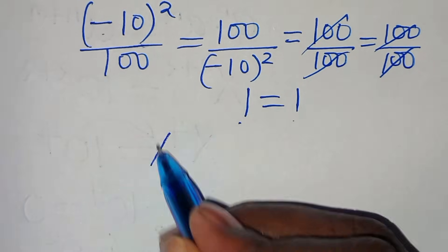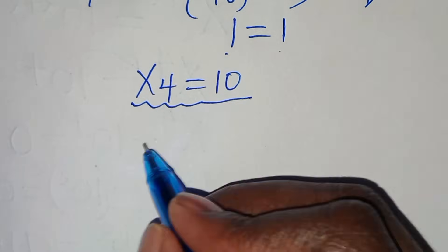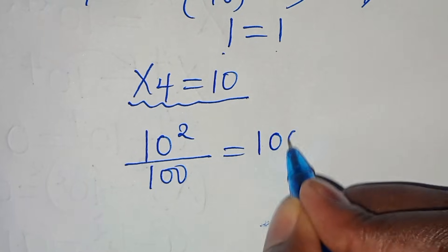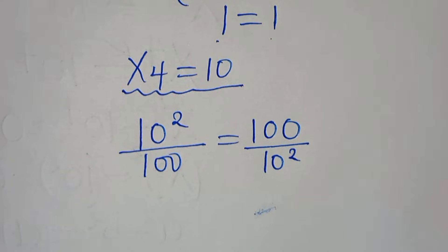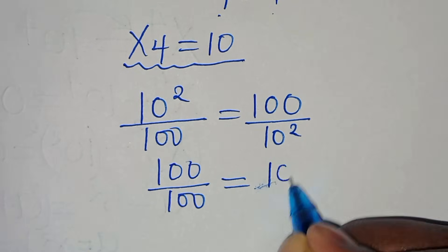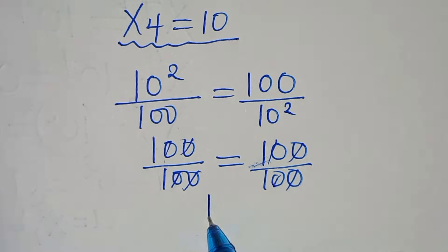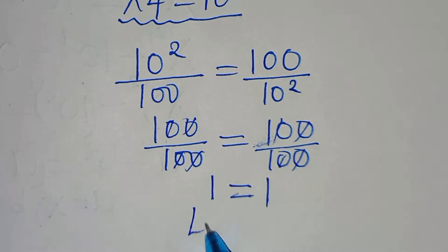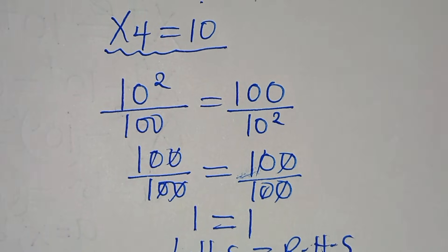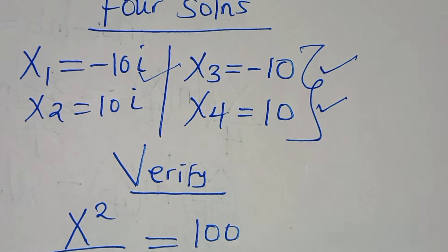Let's take x₄, which is equal to 10. We have 10 to the power of 2 divided by 100, this is equal to 100 over 10 to the power of 2. 10 squared is 100, so 100 over 100 equals 100 over 100, which simplifies to 1 equals 1. The left hand side equals the right hand side, affirming that all 4 solutions satisfy the equation.